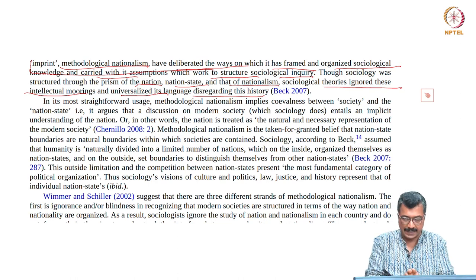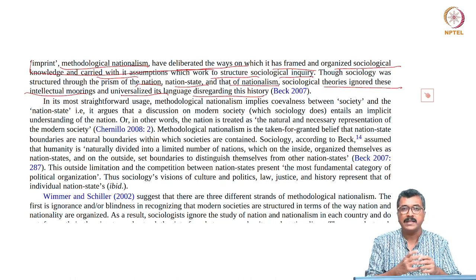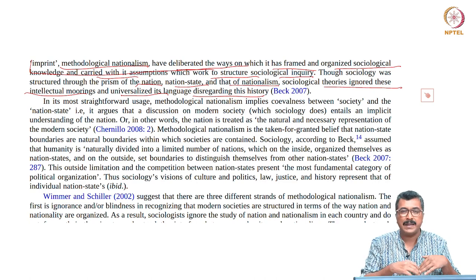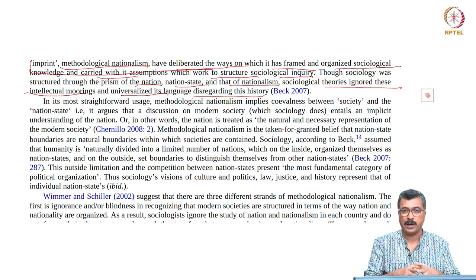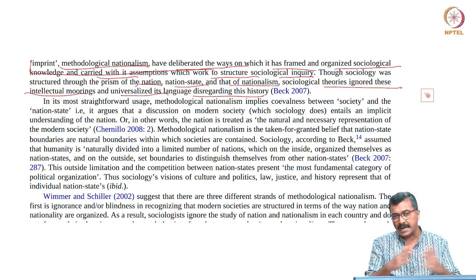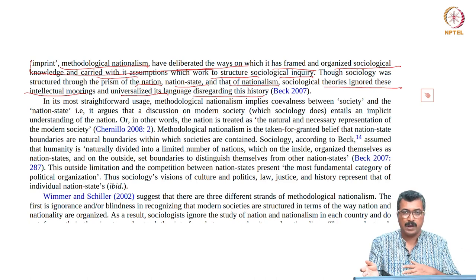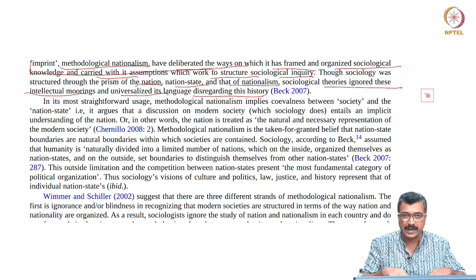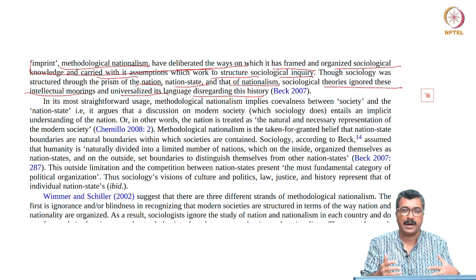With the dawn of globalization, scholars like Ulrich Beck — a very important champion of that argument — would argue that this era of methodological nationalism is over because the nation state has become less effective and national boundaries have become porous and flexible. Many times they have become redundant because digital communication and digital networks do not respect national boundaries. There is an intense transmission of ideas, materials, knowledge systems and news across national boundaries, and the sovereignty of the nation state in protecting its boundary has been compromised.